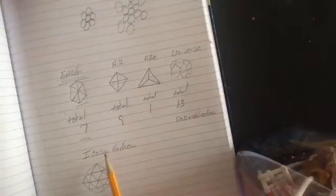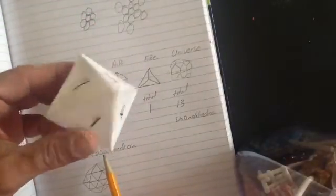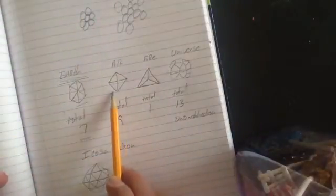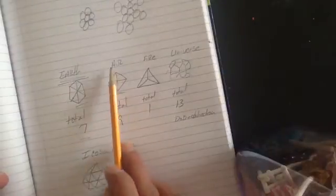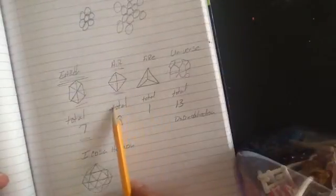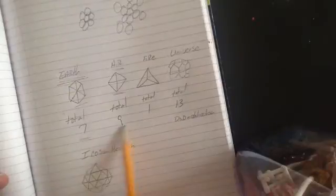Now this one I just showed you, the tetrahedron, is air. And the total is always nine if it's numbered correctly.